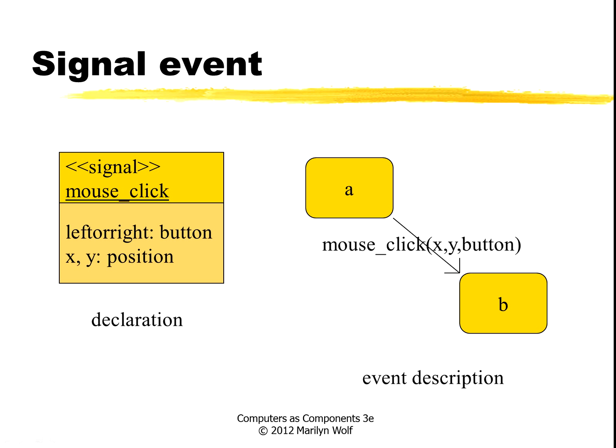Here's an example of a signal event. You'll notice that we've used the stereotype here. So we have a generic class signal. This is a particular object class called mouseClick. It has some attributes here. So this defines a particular type of event. And in our state machine, when you get a mouseClick event in state A, then you go to state B and you call this function.